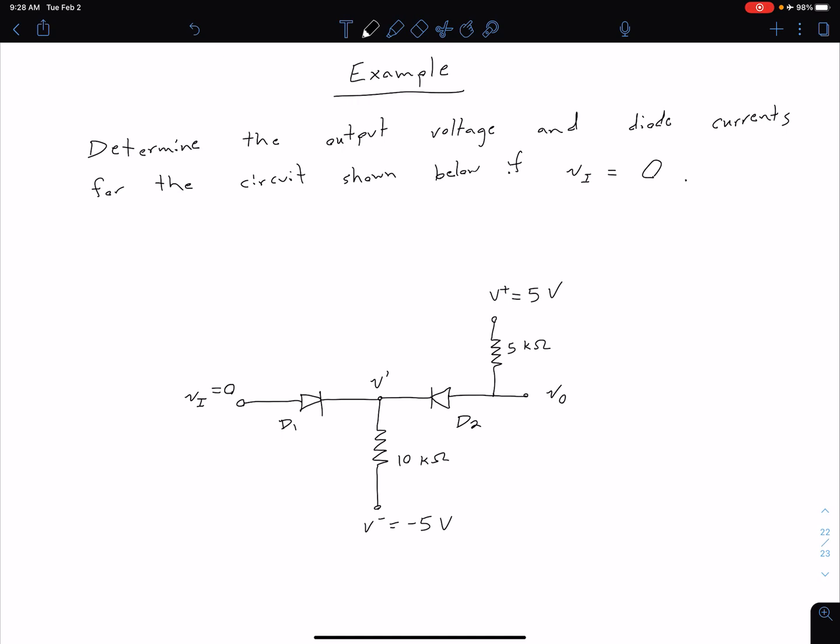So what we're going to do is we're going to follow the procedure outlined in that supplemental information given on Canvas. So shortly we're going to assume states, analyze the circuit, check our assumptions, and then if needed we're going to readjust our assumptions.